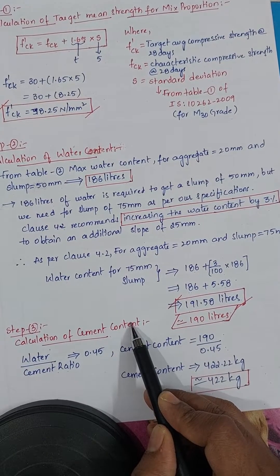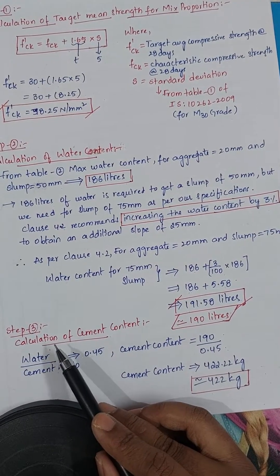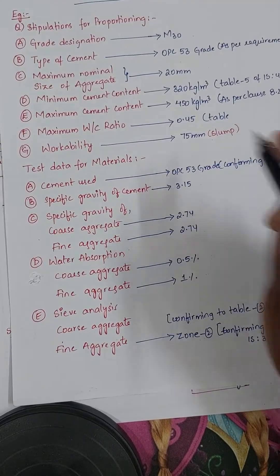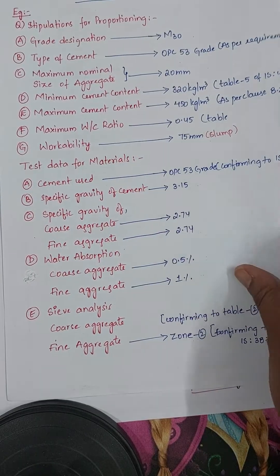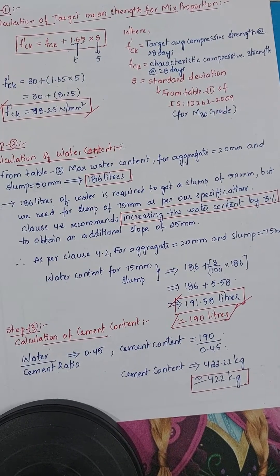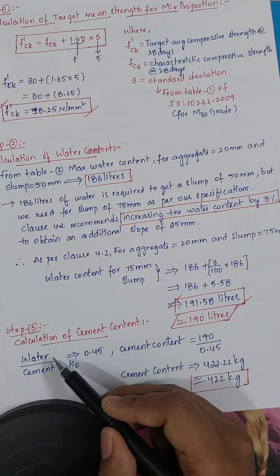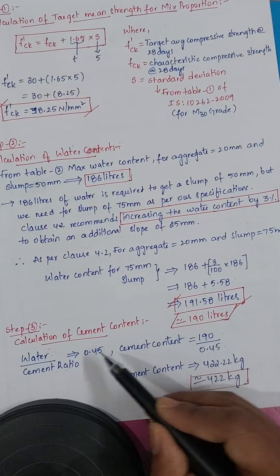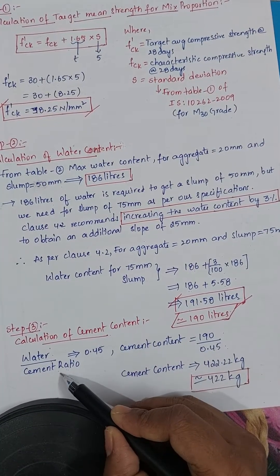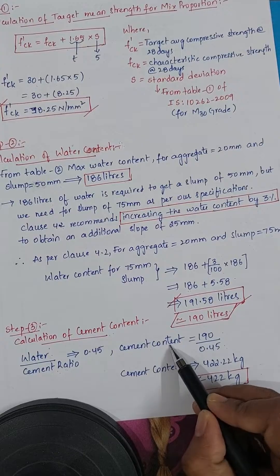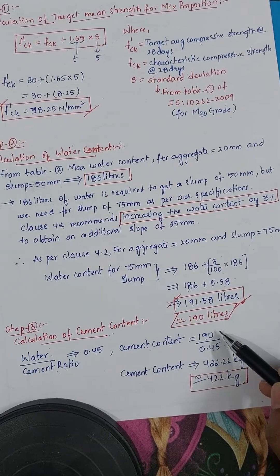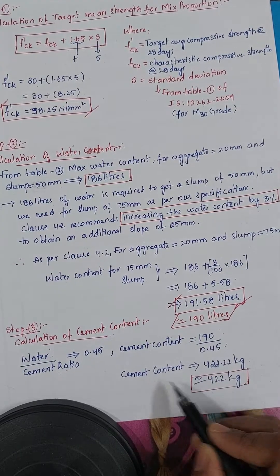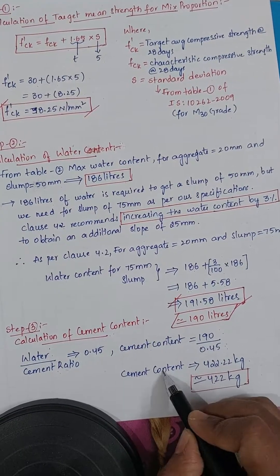Step 3: calculate cement content. From the question, water cement ratio is 0.45. So cement content = water / w/c ratio = 190 / 0.45 = 422.22 kg, which we take as 422 kg per meter cube.